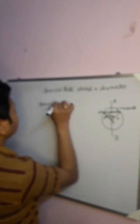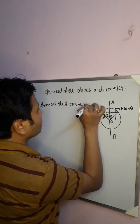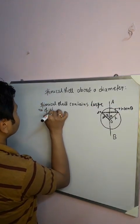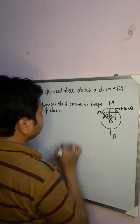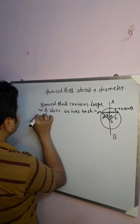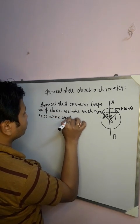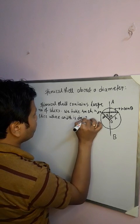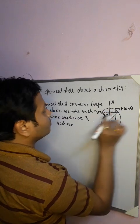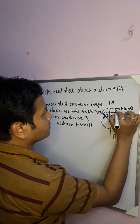This spherical shell contains a large number of slices. We take such a slice whose width is dx and radius — since this angle is θ and this is R, the perpendicular component is R sinθ — so the radius of the slice is R sinθ and the width is dx.